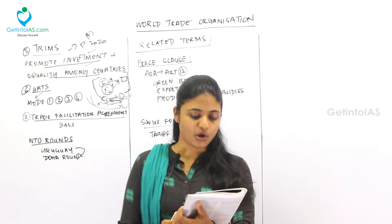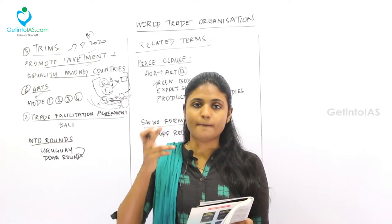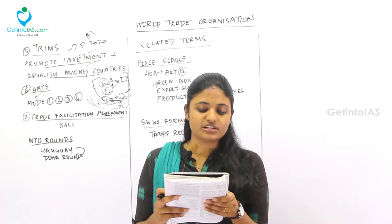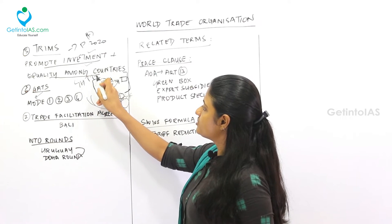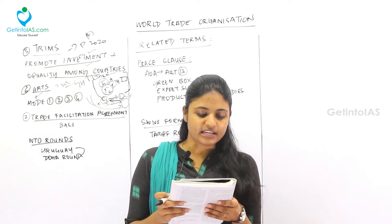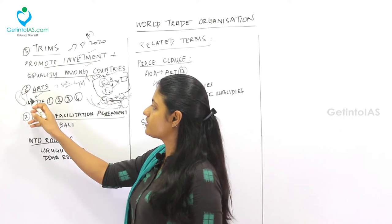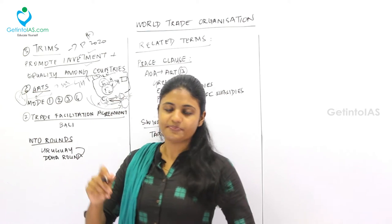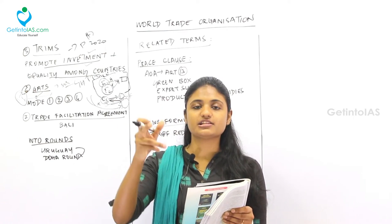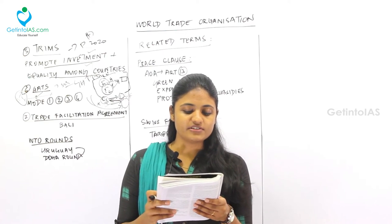GATS — the General Agreement on Trade in Services — is the counterpart of GATT. While GATT covers merchandise or goods exports, GATS calls for liberalization of trade in the service sector. This agreement covers only commercial services, excluding air transport services and government services, as those are not commercial in nature.